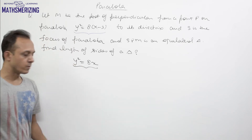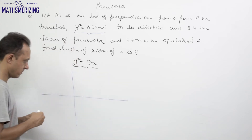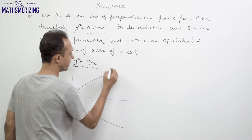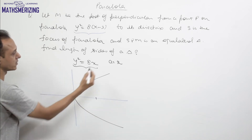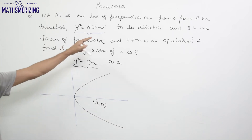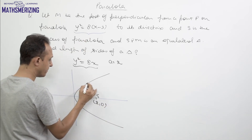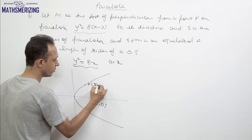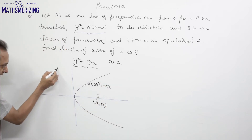For the parabola y² = 8x, the value of a is 2. So the focus S is at (a, 0) = (2, 0). A general point P on this parabola is at (2t², 4t).